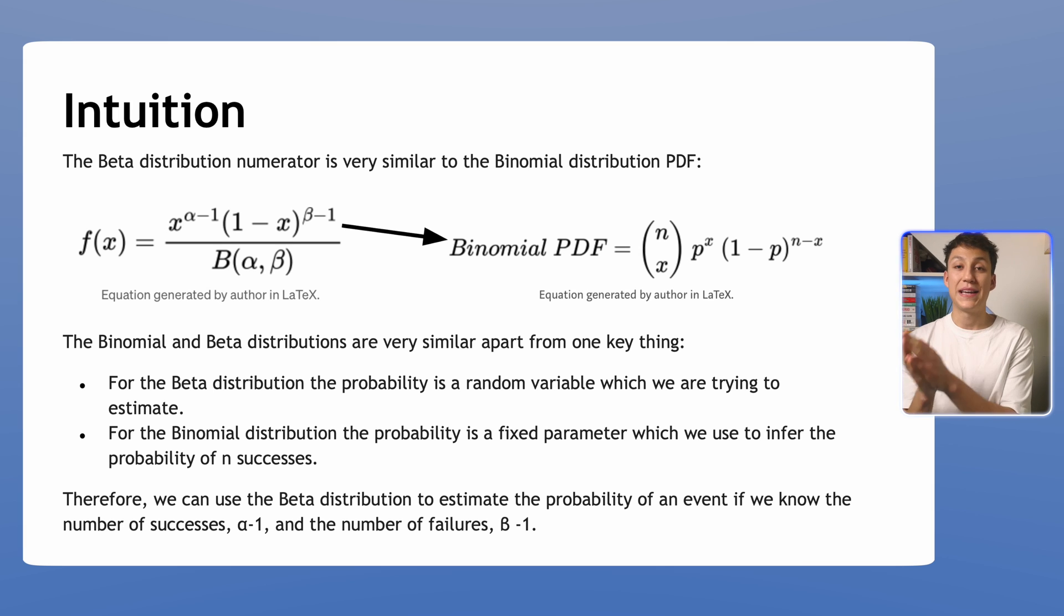Whereas binomial is saying we know what the probability of a success is, so what would be the probability of achieving this many number of successes in some given number of trials. So it's kind of like an inverse of it and that's why you see they're used as conjugate priors so often, because they're kind of like the inverse of each other. That's the reason it's so useful to have these two things in Bayesian updating problems. We can use the beta distribution to estimate the probability of an event if we know the number of successes, in this case alpha or alpha minus one because of the correction, and the number of failures will be beta or beta minus one due to that correction.